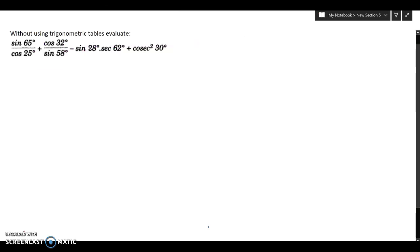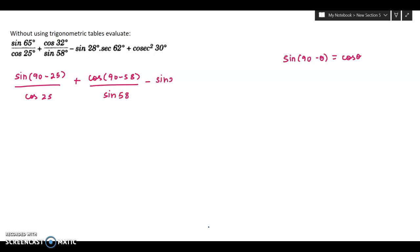Now I will start with a trigonometric tables question. Before that I would like to revise: sine 90 minus theta is equal to cos theta. In this case we can write sine 65 as sine 90 minus 25, divided by cos 25 plus cos 32 can be written as 90 minus 58 by sine 58 minus sine 28 into 1 by cos 60 plus cosec square 30. You know that cosec 30 is equal to 2, that means 2 square is 4.